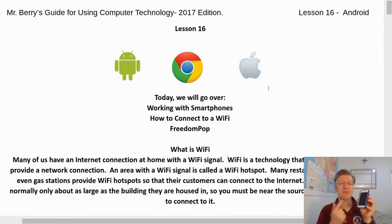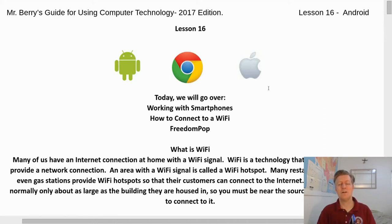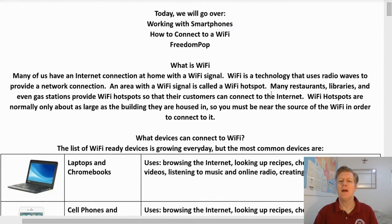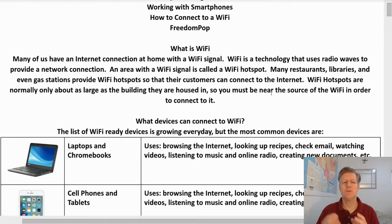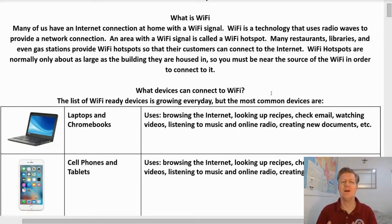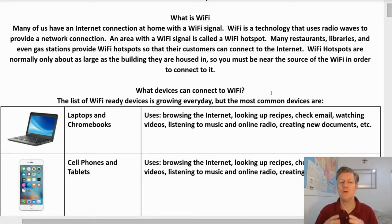Our next topic is smartphones. These steps are focused on Android phones, though if you have an Apple phone you can still follow along. The first term we're covering is Wi-Fi. Many of us have an internet connection at home with a Wi-Fi signal. Wi-Fi is a technology that uses radio waves to provide a network connection. An area with a Wi-Fi signal is called a Wi-Fi hotspot. Many restaurants, libraries, and even gas stations now provide Wi-Fi hotspots so customers can connect to the internet.